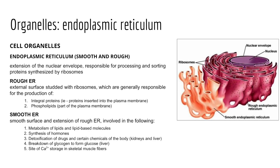Rough ER is also responsible for manufacturing integral proteins bound for the plasma membrane and can synthesize phospholipids for cell membranes. Smooth ER has five major functions: it's the site of lipid and lipid-based molecular synthesis including steroid hormones; it's the site of detoxification of certain drugs and chemicals, found substantially in liver and kidney cells; it's responsible for the breakdown of glycogen in the liver, releasing glucose into the blood; and in a specialized form found in skeletal muscle cells, it's responsible for the storage of calcium ions involved in muscle contraction.